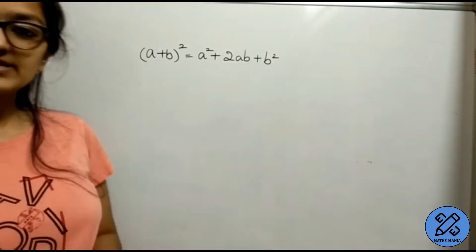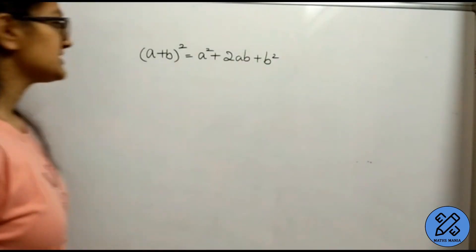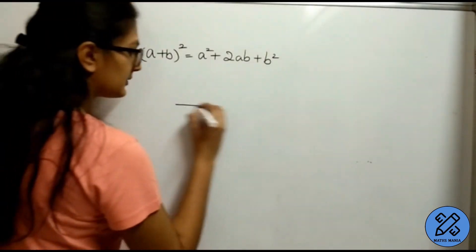Have you ever wondered why is a plus b the whole square equal to a square plus 2ab plus b square? So, let's just start it with a line.